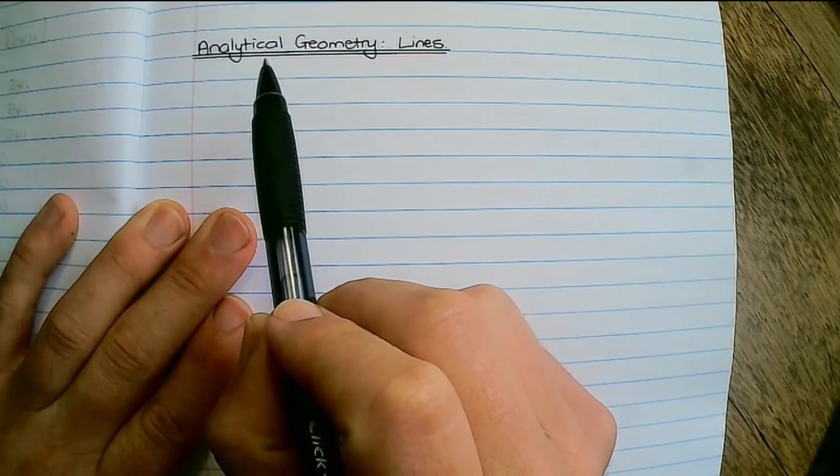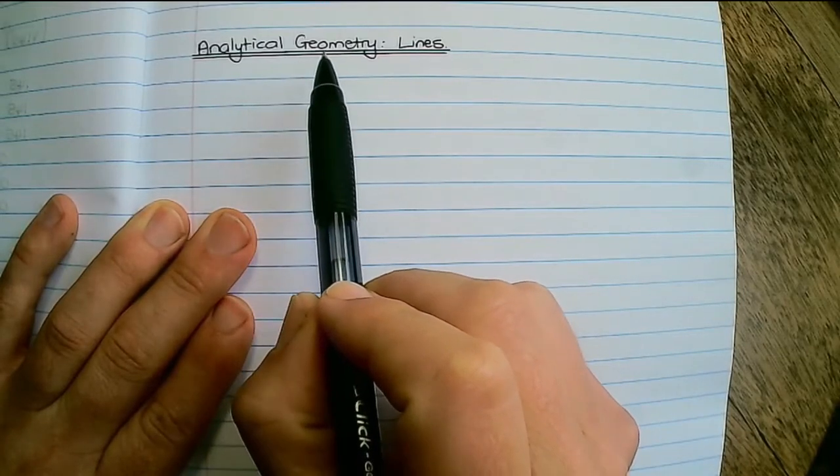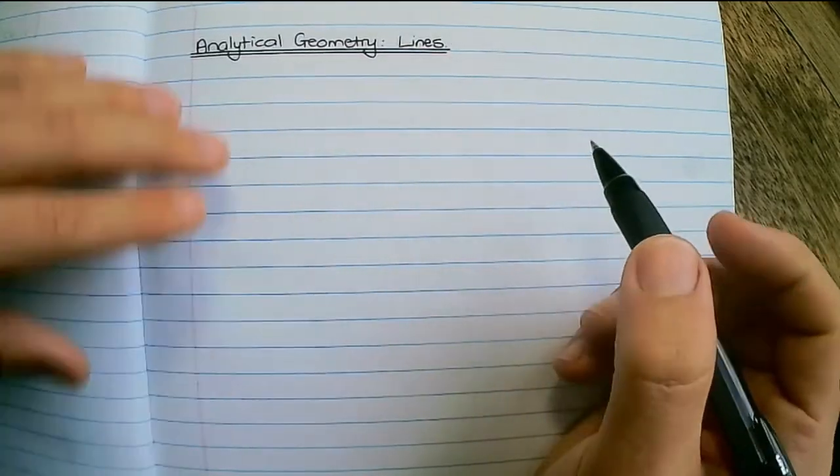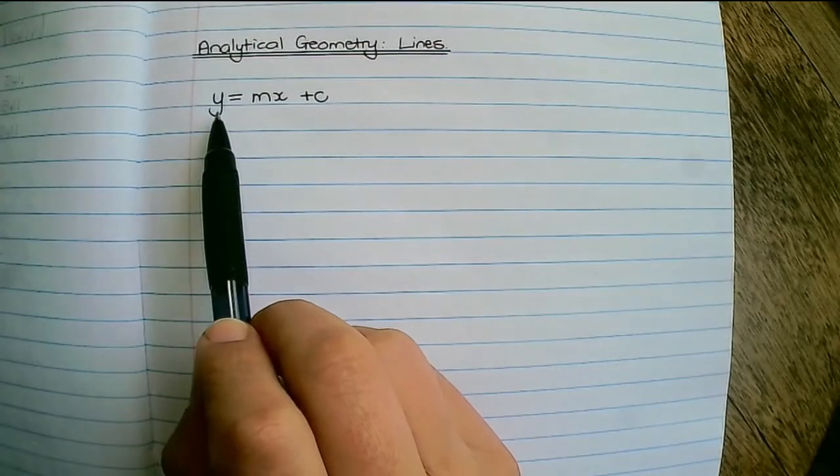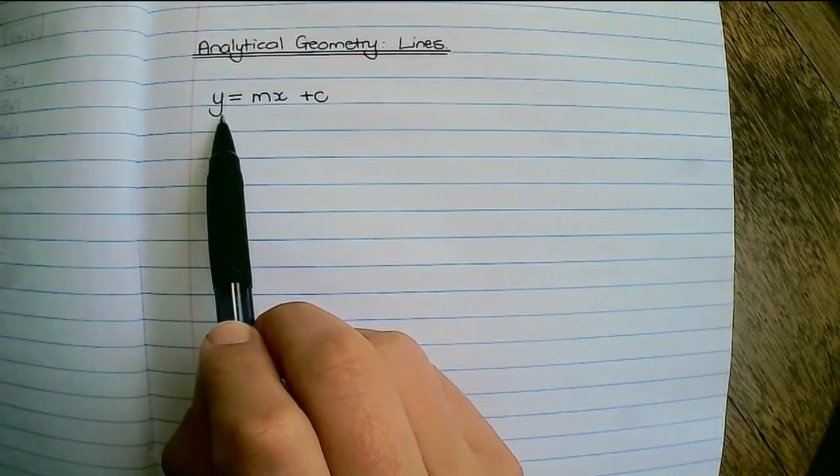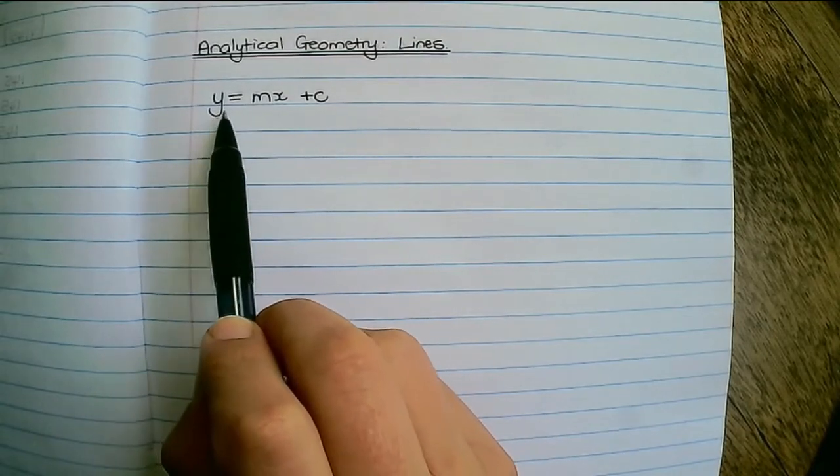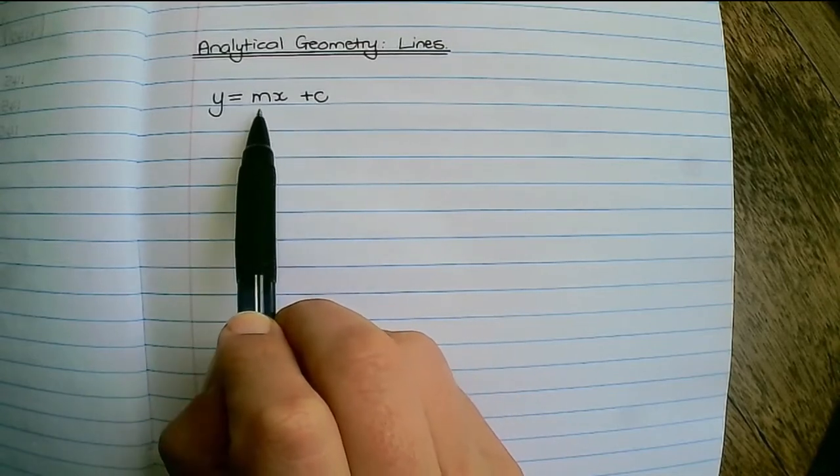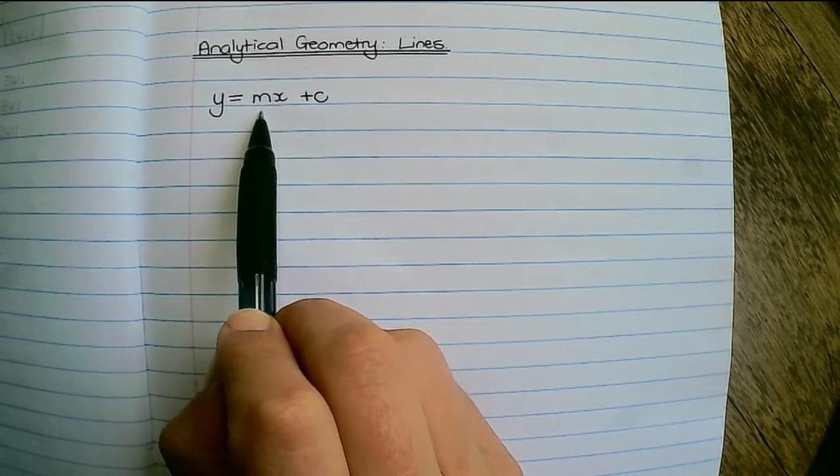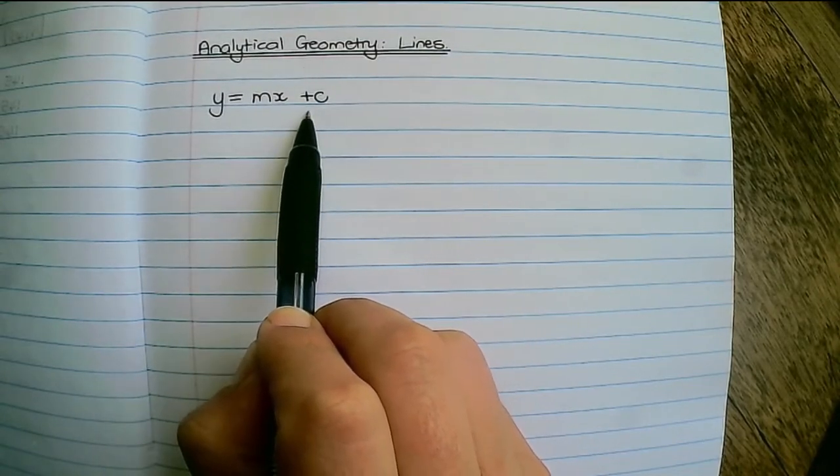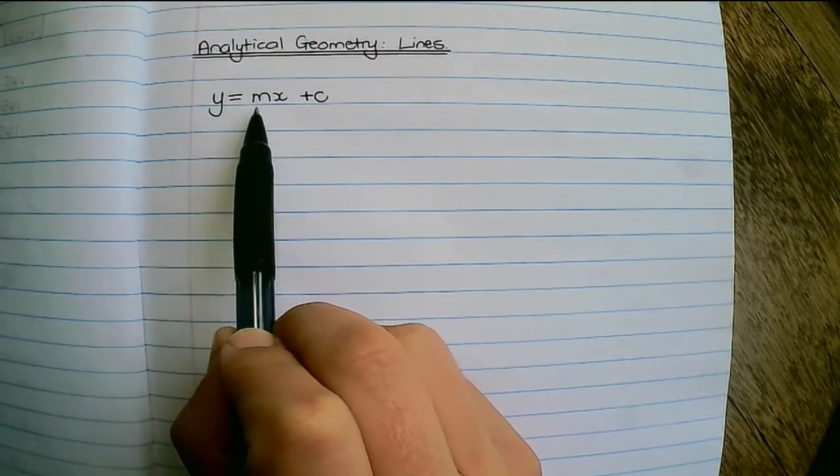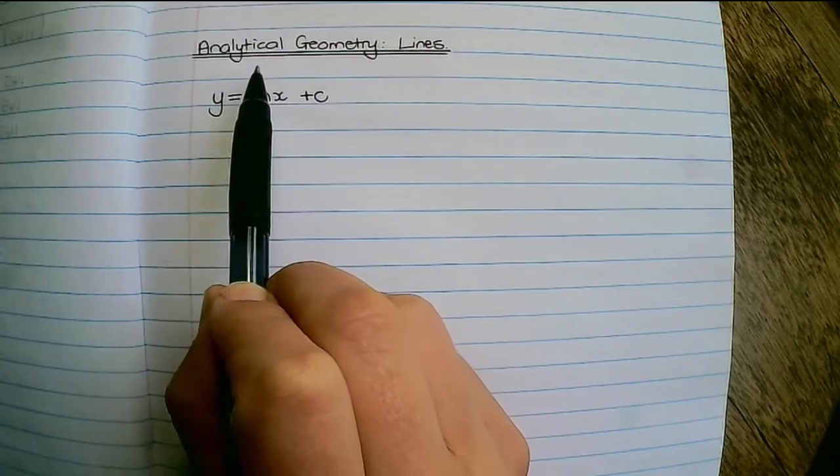In this video we will continue with analytical geometry and we are focusing on lines. So in grade 9 you would have learned the equation of a straight line y equals mx plus c, where m represents the gradient and c the y-intercept.